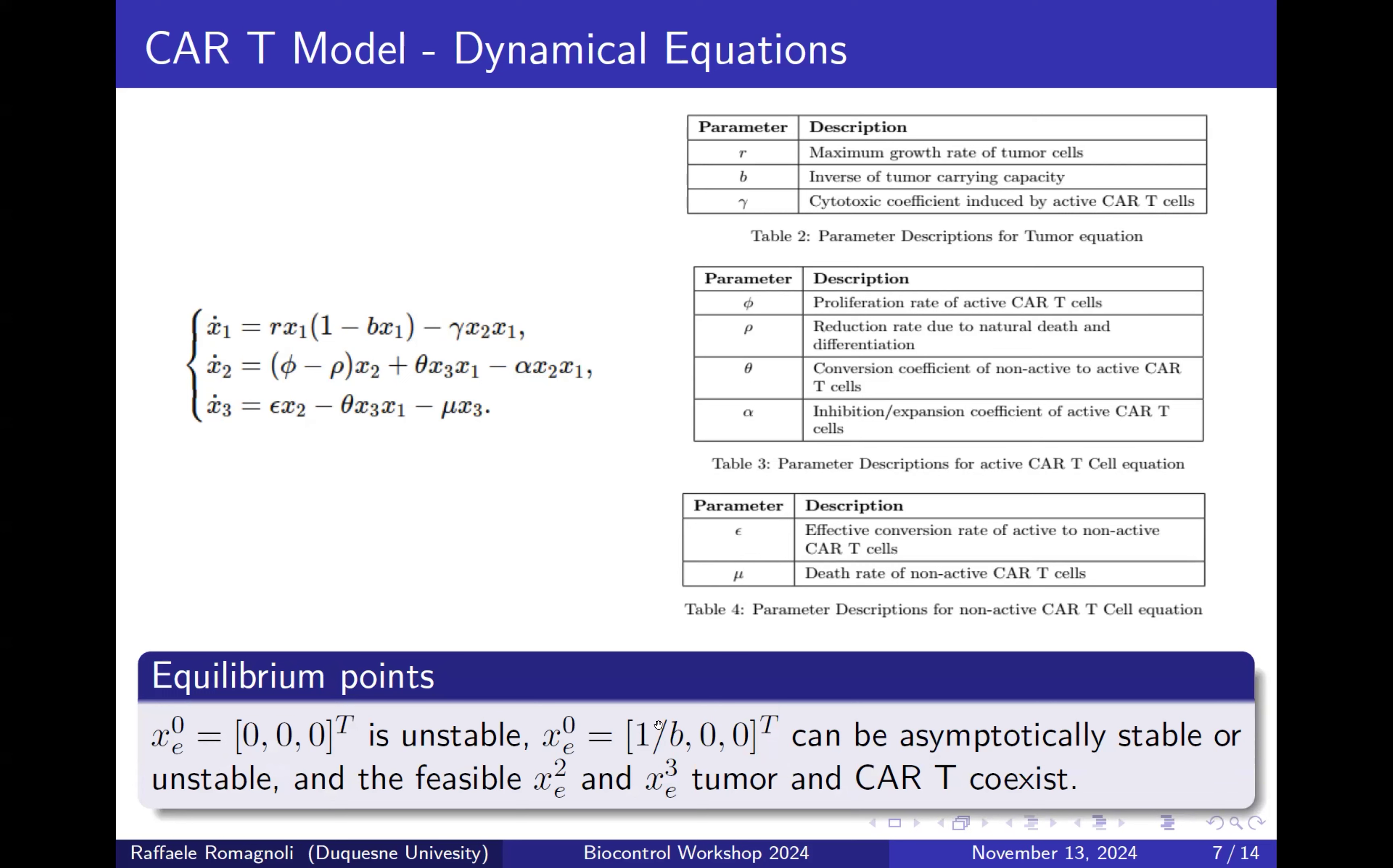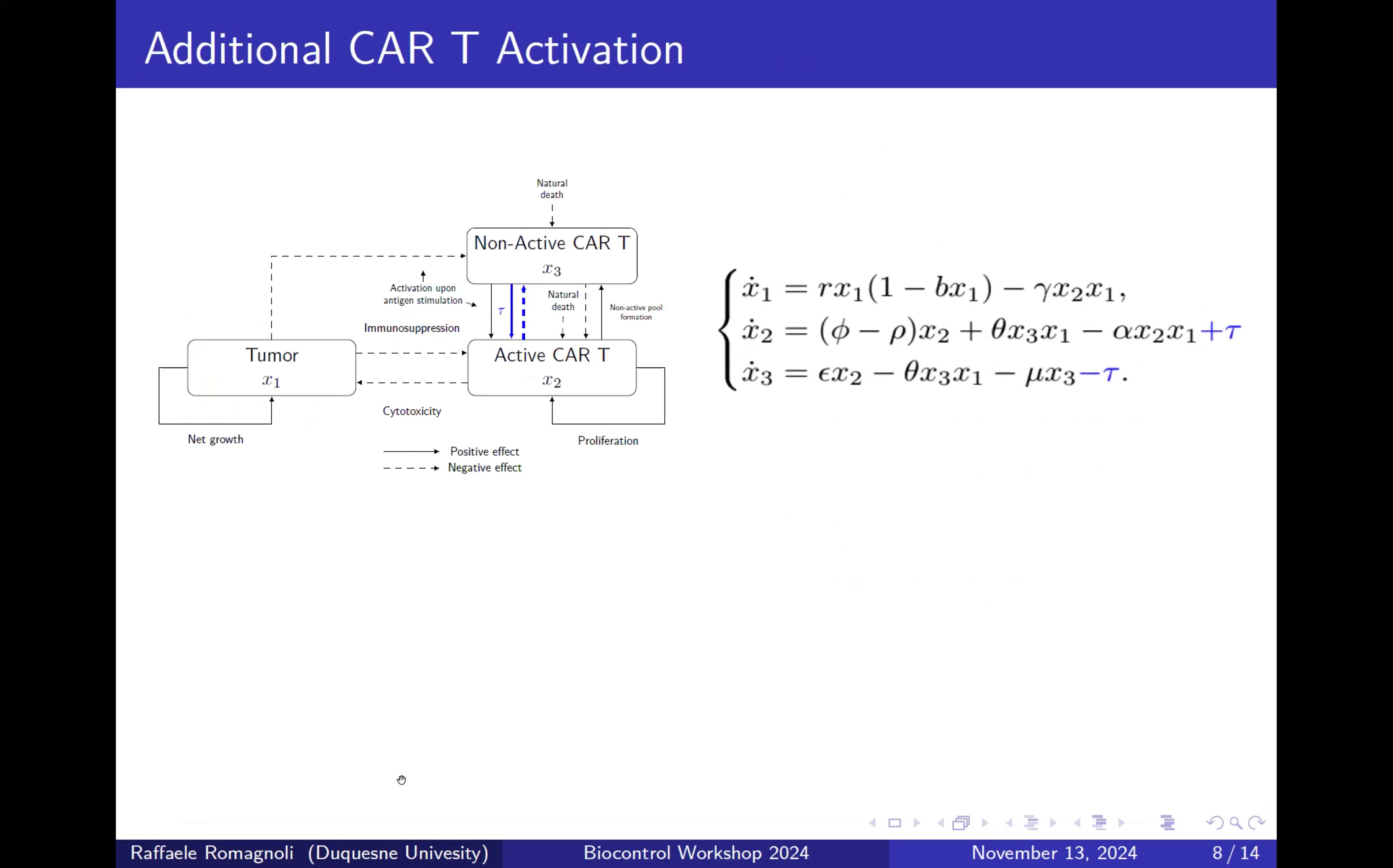The other equilibrium point represents where the tumor achieves this maximum number of cells, and it can be asymptotically stable or unstable. So we have a bifurcation based on the parameters. But then the other two feasible equilibrium points represent that there is tumor and CAR-T cell coexistence. So in other words, if we want to achieve particular tumor clearance, we need to find a way to end up in one of these two equilibrium points which are stable.